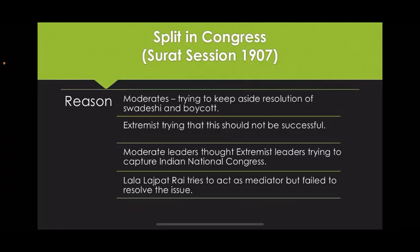The split in Congress happened in the Surat Session of 1907. The moderates were trying to set aside the resolution of Swadeshi and boycott, while the extremist leaders were trying to prevent this. Moderate leaders thought that extremist leaders were trying to capture the Indian National Congress. Lala Lajpat Rai tried to act as mediator but failed to resolve the issue, and finally there was a split in the Indian National Congress.